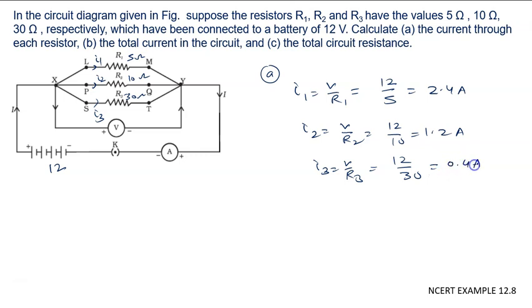Then B part, the total current in the circuit. Total current, we will say I equal to I1 plus I2 plus I3. So it is 2.4 plus 1.2 plus 0.4. We will calculate it is 4 ampere.